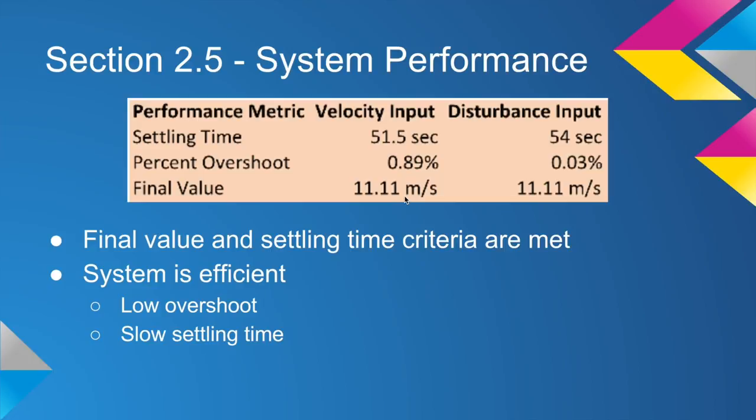The disturbance in this system was introduced at 100 seconds. The settling time required for the system to return to its final value was 54 seconds. This had almost no overshoot and eventually the system made it back to its final value of 11.11 meters per second, satisfying our final value requirement.